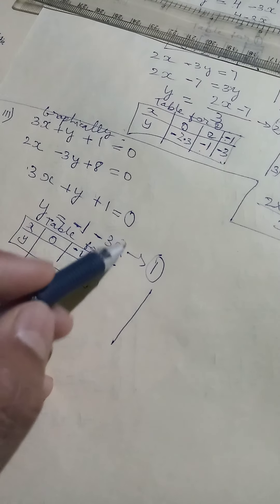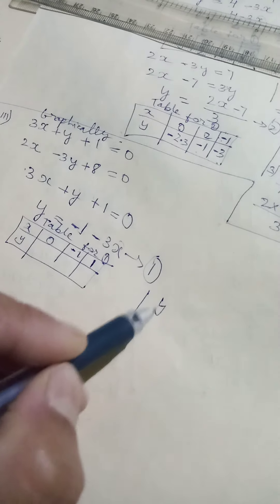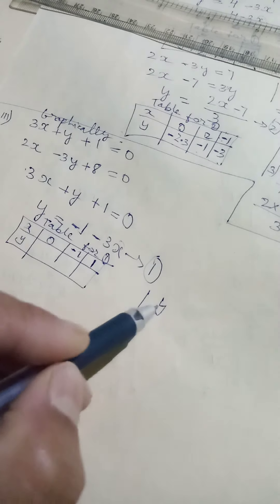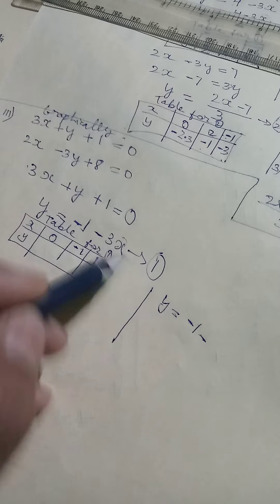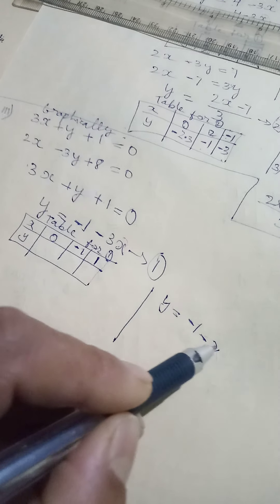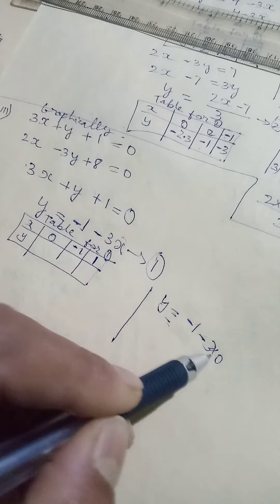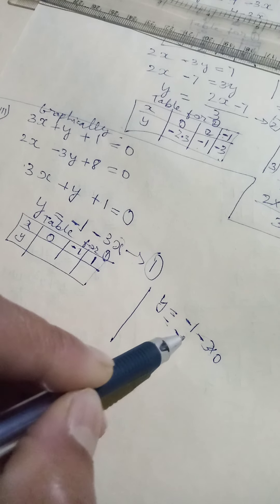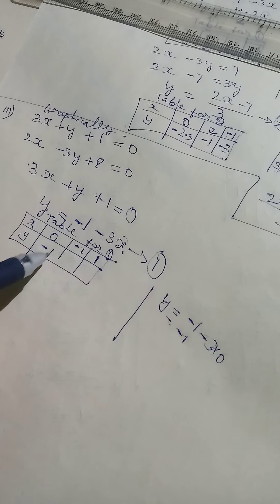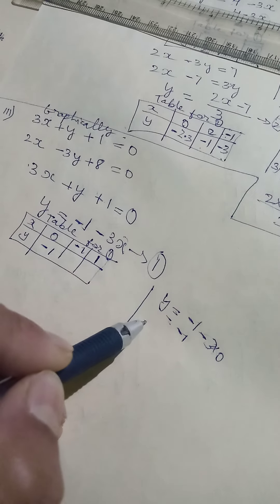So we will replace it here so that will get Y. So minus 1, in place of X we need to put 0. So 3 into 0 will be 0, then minus 1.